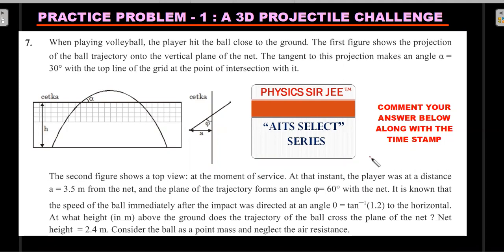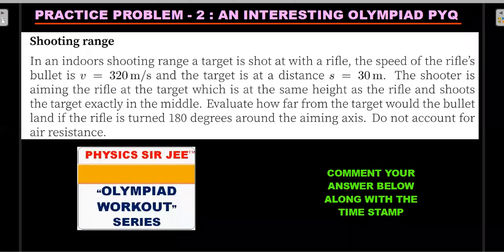Practice Problem 1 is from a recent AITS examination held just before JEE Advanced — I love how this question was conceived. It involves three-dimensional projectile motion: a volleyball player throws a ball from one end of a court to another, which is a 3D projectile, but you see a 2D projection on screen. Read the location carefully to get a feel for the picture. Please comment your answer below with a timestamp, and if you're struggling, I'll cover the solution in the AITS Select Series.